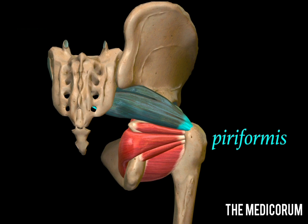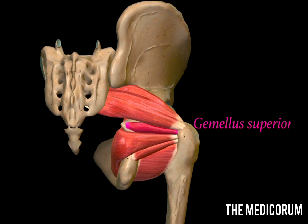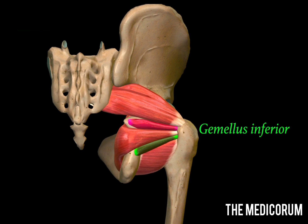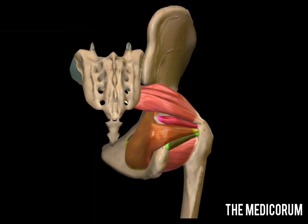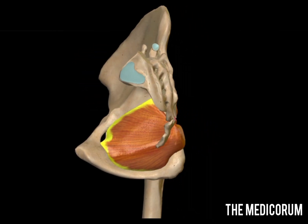After removing all the superficial muscles of the gluteal region we find the deep muscles. The first deep muscle is the piriformis, which lies below and parallel to the posterior border of gluteus medius. Below piriformis comes gemellus superior — a small muscle. Below that is gemellus inferior. Between the two gemelli there is another muscle: the obturator internus. Obturator internus has a tendon and a fan-shaped belly; the tendon lies in the gluteal region whereas the fan-shaped belly lies in the pelvis.